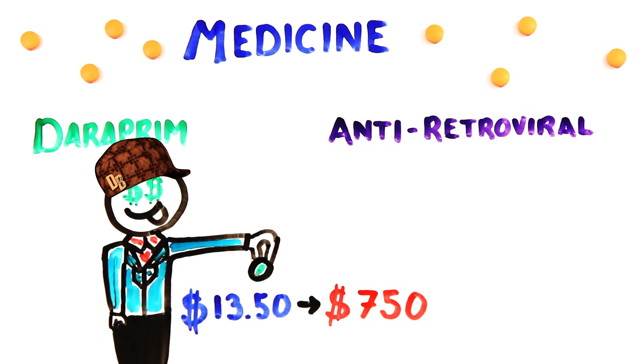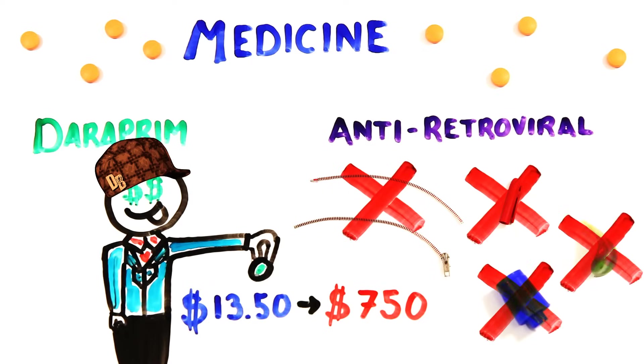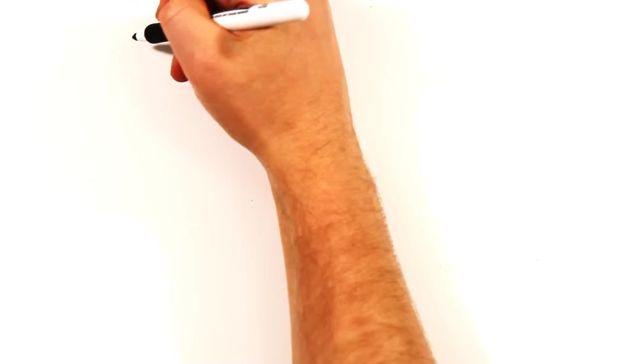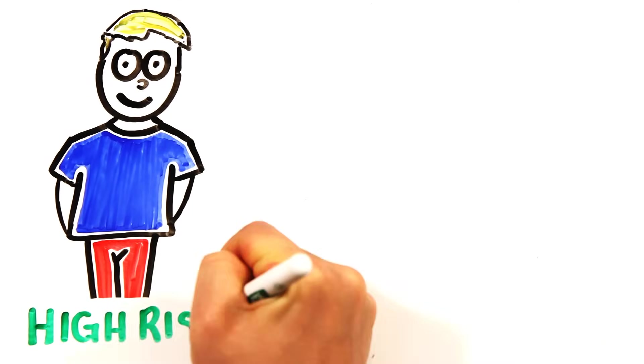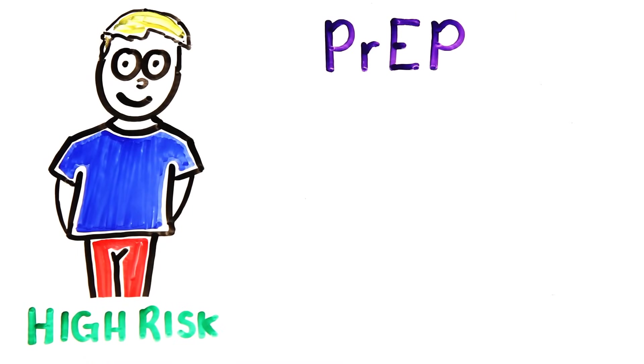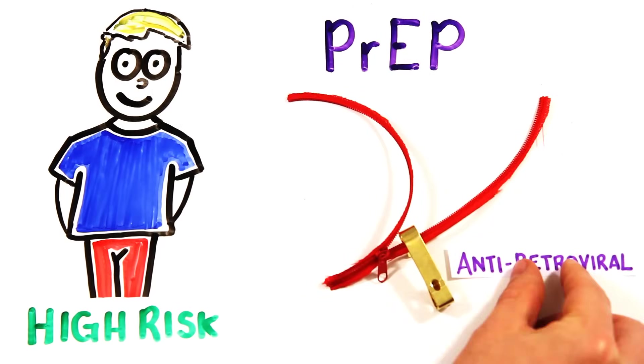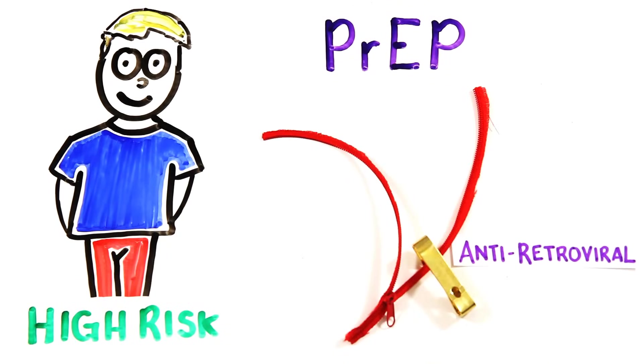There are also antiretroviral drugs that slow the virus down by blocking certain enzymes which are required for the virus to multiply. Similarly, those without HIV but at high risk of contracting the virus may take pre-exposure prophylaxis or PrEP. This works similar to antiretroviral drugs by blocking the enzyme reverse transcriptase.